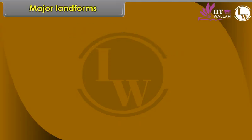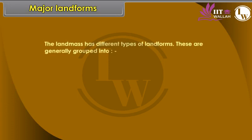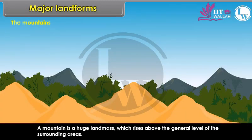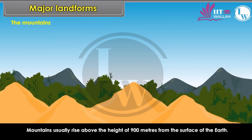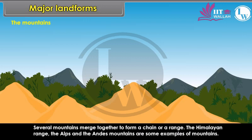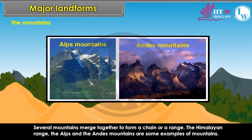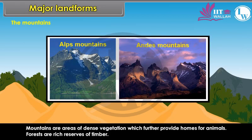The land mass has different types of landforms. These are generally grouped into mountains, plateaus, and plains. A mountain is a huge land mass which rises above the general level of the surrounding areas. Mountains usually rise above the height of 900 metres from the surface of the earth. Several mountains merge together to form a chain or a range. The Himalayan range, the Alps and the Andes mountains are some examples. Mountains are areas of dense vegetation which provide homes for animals, and forests are rich reserves of timber.